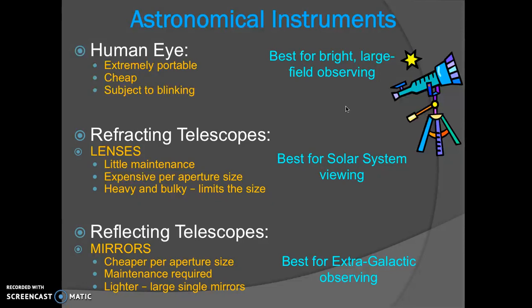In all seriousness, two major types of telescopes that astronomers use are refracting telescopes and reflecting telescopes. Refracting telescopes use lenses and reflecting telescopes use mirrors. Refracting telescopes are older telescopes typically. The big telescopes that are used for professional astronomy are now all reflecting telescopes. Refracting telescopes are made out of lenses, heavy glass. There's very little maintenance involved after the lens is cut and shaped, but they're very expensive per aperture size. The bigger the lens gets, the telescope gets very heavy and very bulky, and that limits the size. Refracting telescopes are very good for solar system viewing.